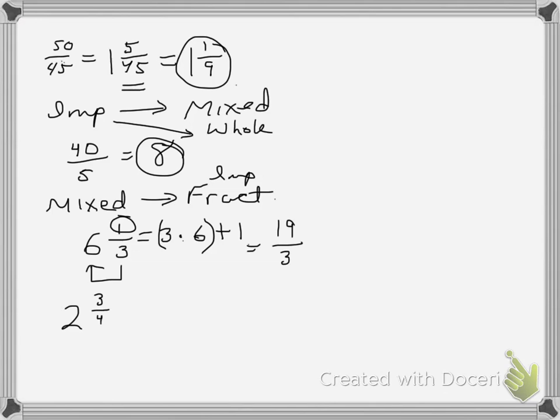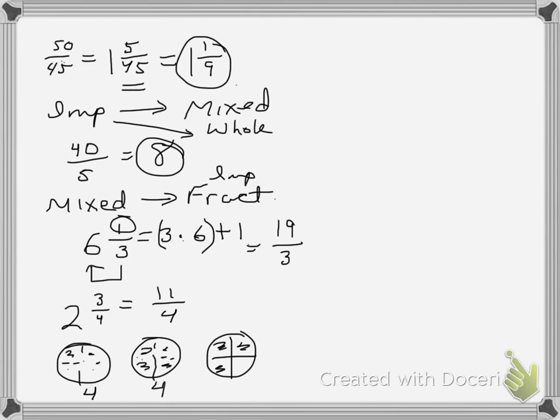Let me give you a couple more examples of that. Let's say I had 2 and 3 fourths. Again, I go 4 times 2 is 8 plus 3 more is 11 over 4. Hopefully this is review to you. Let me show you that in picture form so you see what we're doing here. If we have 2 wholes and 3 fourths.